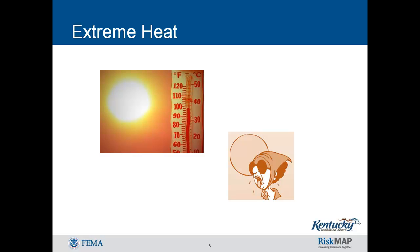Extreme heat can affect any part of Kentucky given the appropriate conditions and the right time of year. Extreme heat is most likely to occur in the months of July, August, or September. It has been known to occur in May, June, and October. The likelihood of extreme heat occurring outside of these months is small. Extreme heat most often occurs in the summer months and is often associated with drought. It's dangerous to people because it makes it difficult to maintain a normal body temperature.